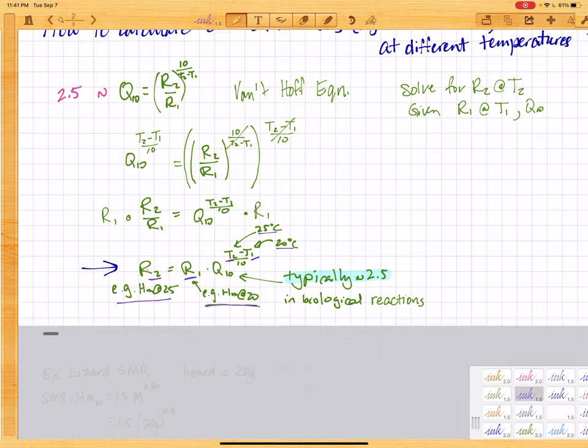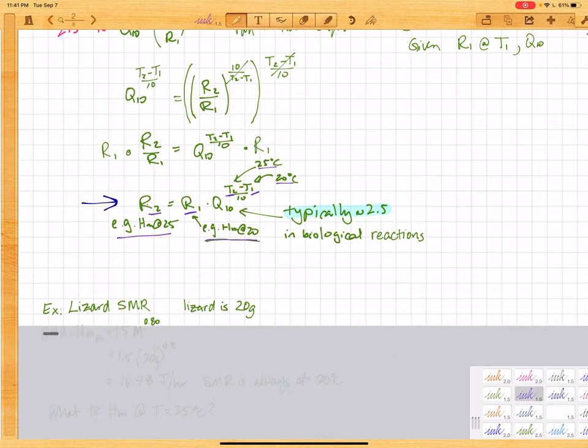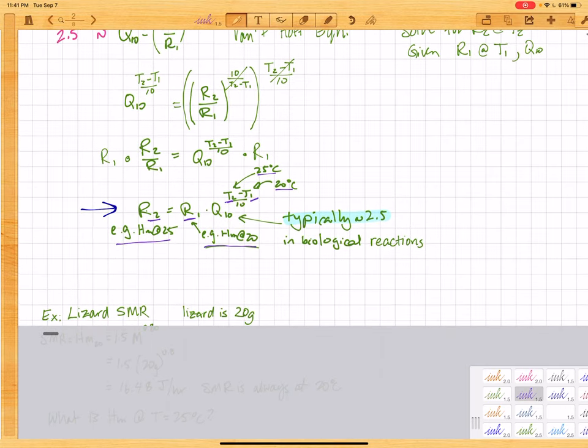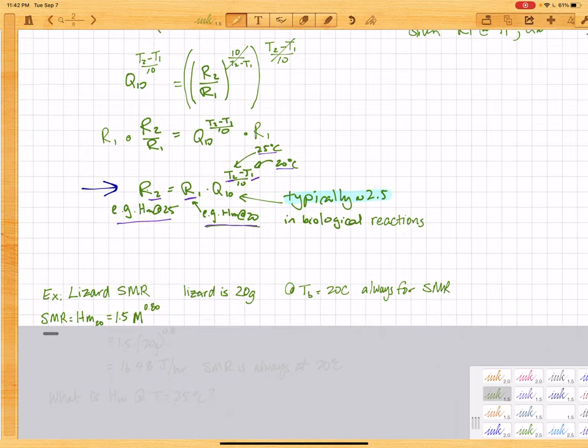So for example, if we have a lizard, if we have the standard metabolic rate of a 20 gram lizard, and remember standard metabolic rate is at a body temperature of 20 degrees Celsius. So this is always for SMR. That's what makes it standard.